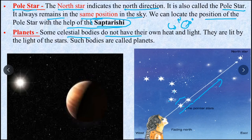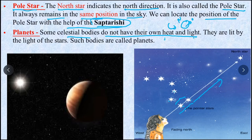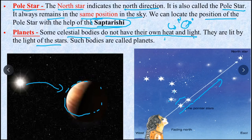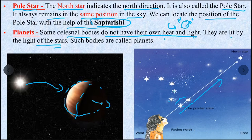Planets do not have their own light. We have to remember they are lit by other stars. If the sun's light is visible, this part is visible and this part is not visible. So they are lit by the stars. Such bodies are called planets.